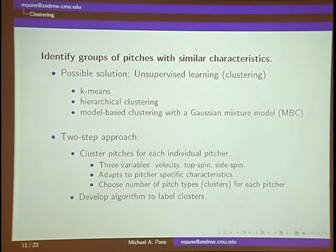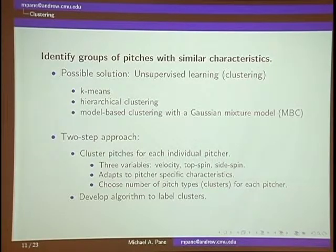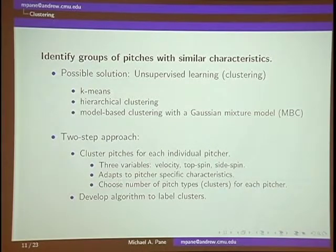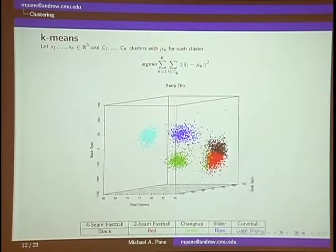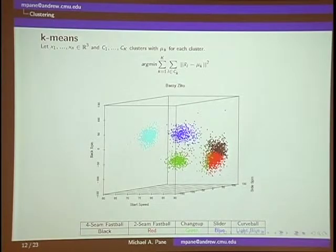Breaking down how we attack this problem: we want to identify groups of pitches with similar characteristics, and since we don't have any truth data set, we need to use an unsupervised clustering approach. We tried a variety of different methods — k-means, hierarchical clustering, and model-based clustering. We see this as a two-step approach where we cluster the pitches for every pitcher individually, because this adapts to pitcher-specific characteristics. Tim Wakefield's fastball goes only 78 miles per hour, but Craig Kimbrel's might go 98 miles per hour. K-means is actually not working very well — there's some obvious misclustering, and we were able to easily rule this method out.